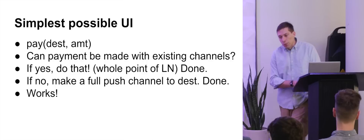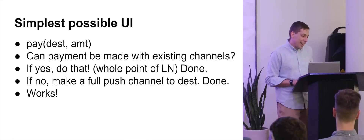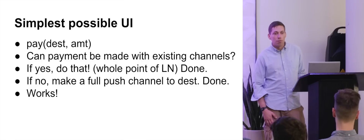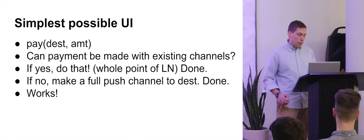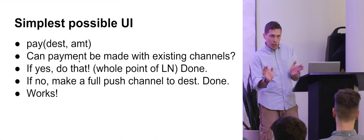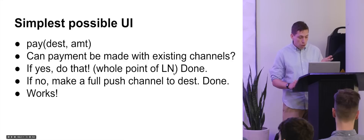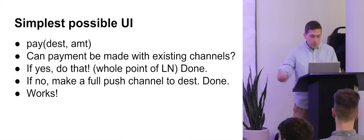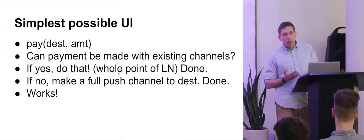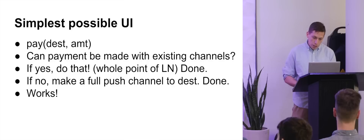This allows a really simple UI where you just type 'pay, destination, amount' — no choices for the user. The flow is: you want to pay a destination some amount; first check if you have channels open with enough money to route. If yes, use that — done, takes a few seconds. If not, open a channel for the full amount and push the entire amount to the new counterparty — done, but takes about 10 minutes. There's no extra cognitive load for the user. It can look a lot like existing Bitcoin transactions.